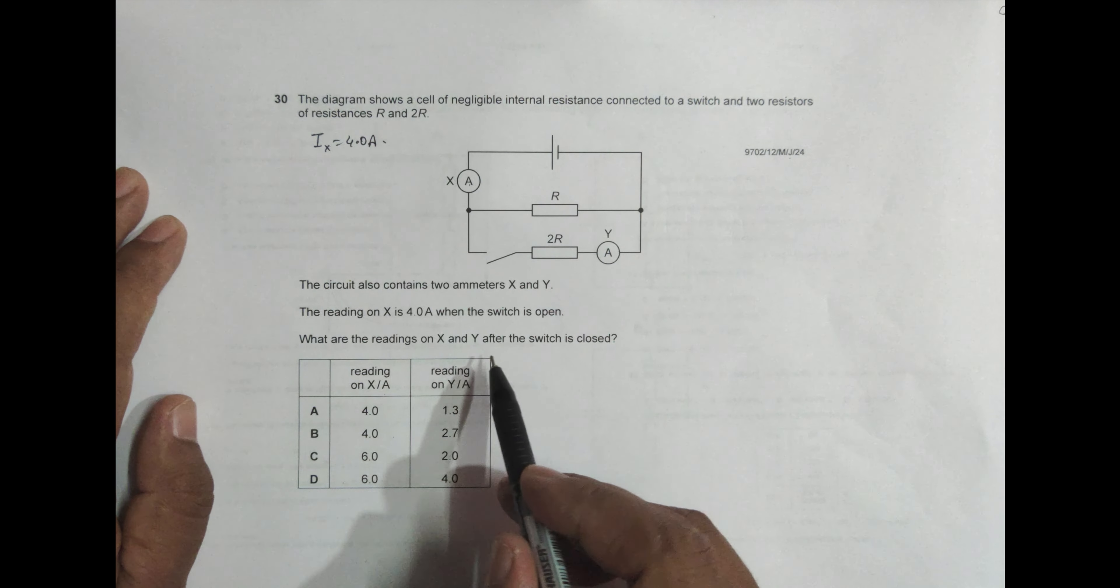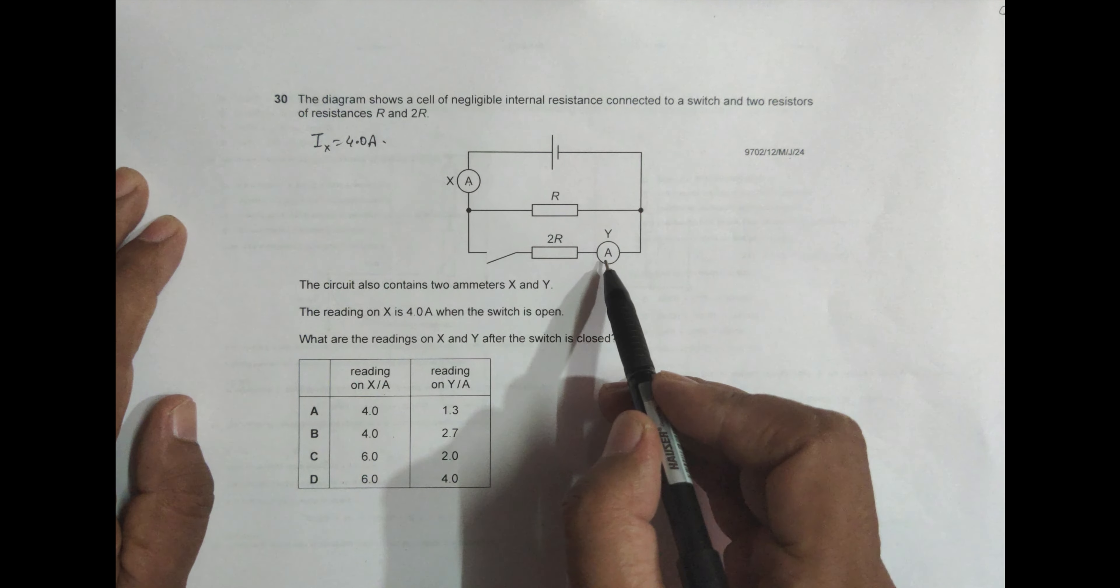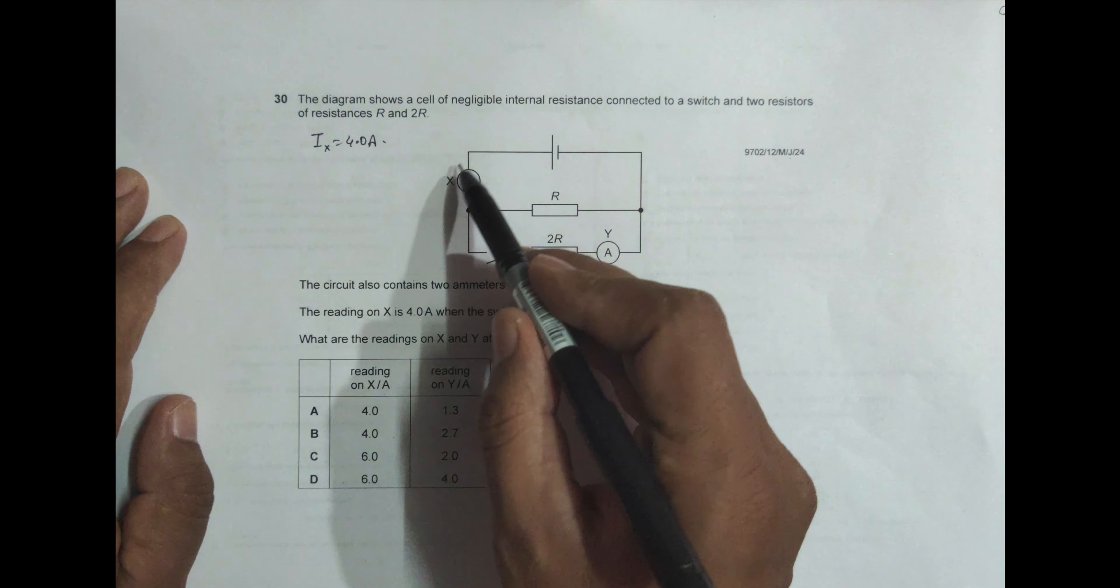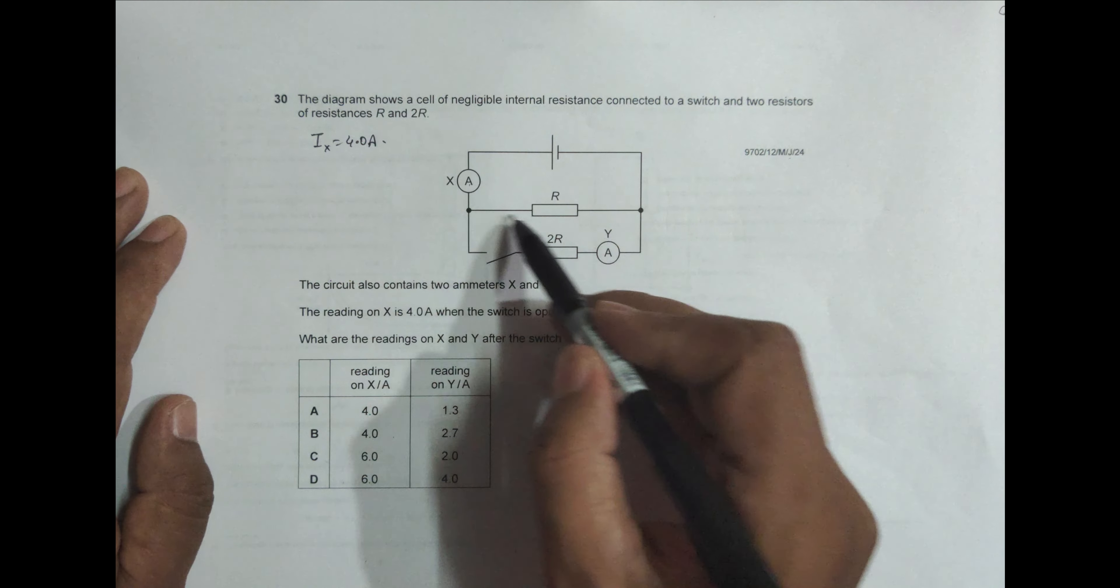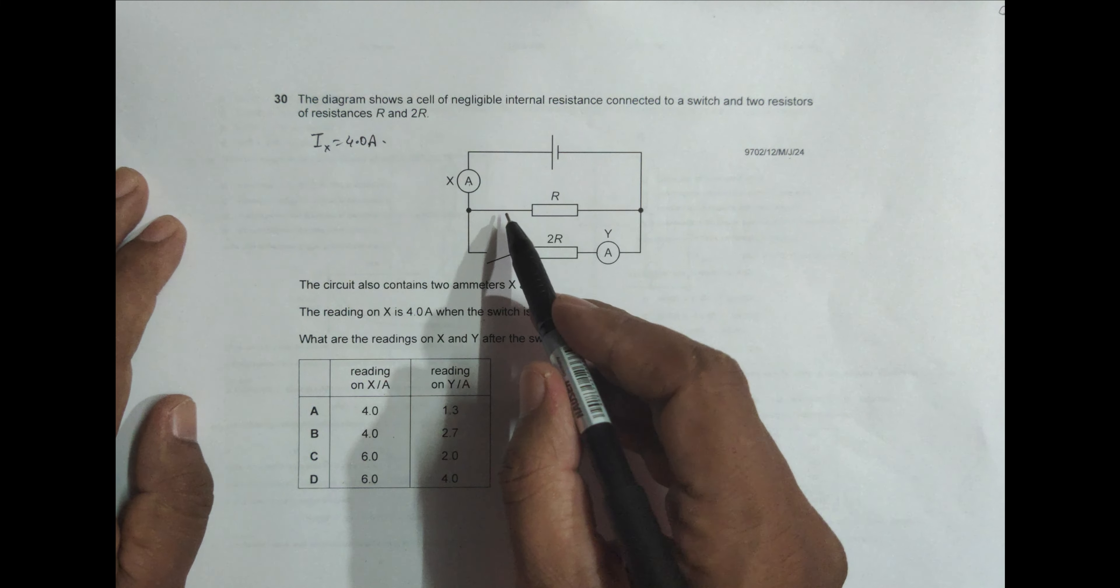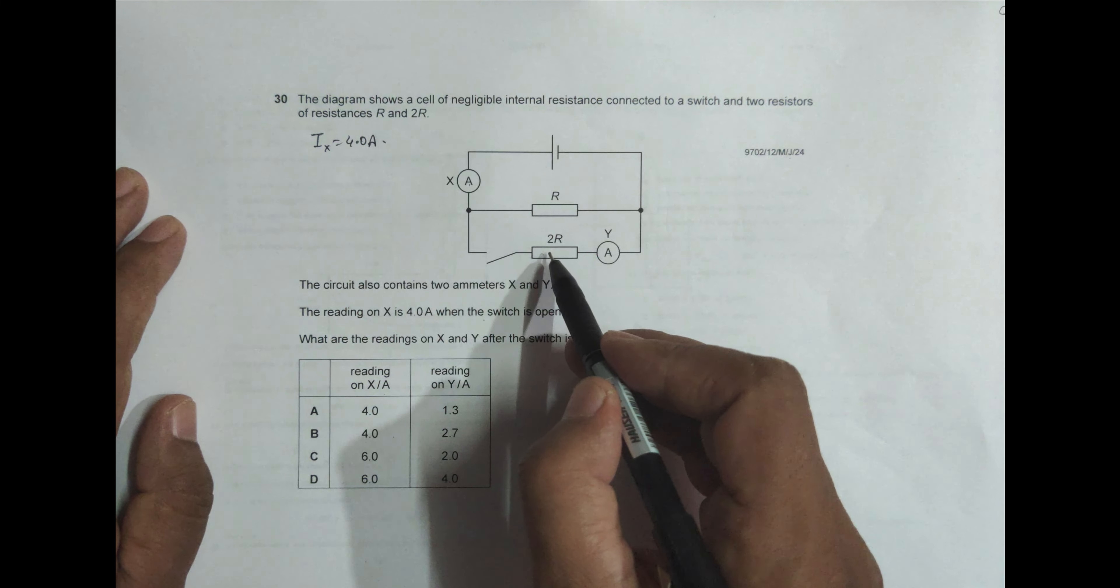What are the readings on X and Y after the switch is closed? So we have to determine things after the switch is closed. So initially when open, current flows through this path only, and the resistance will be R only. These 2R would not work.